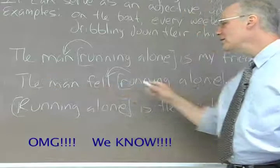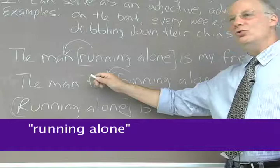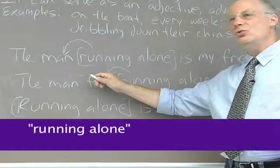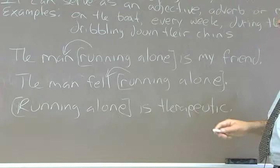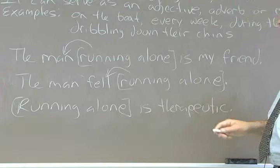In this sentence, the man fell running alone. Running alone tells you under what conditions the falling took place. It tells you how the falling occurred. So running alone is an adverbial phrase in this sentence. And you notice you could move it. Running alone, comma, the man fell. This is an adverbial phrase.